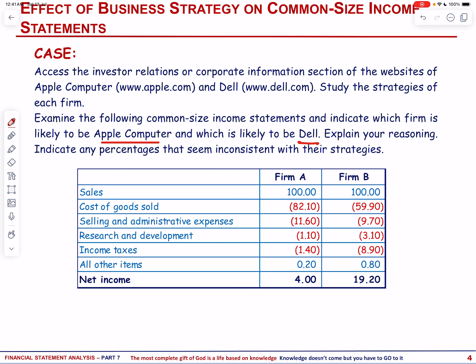Looking at the figures, I would like to come up with a conclusion: Firm A is Dell and Firm B is Apple Computer. Let us dig into the clues, starting with cost of goods sold. The cost of goods sold to sales percentage is a financial metric that indicates how efficiently a company is converting its sales into profit after accounting for the direct costs associated with producing goods or services sold.